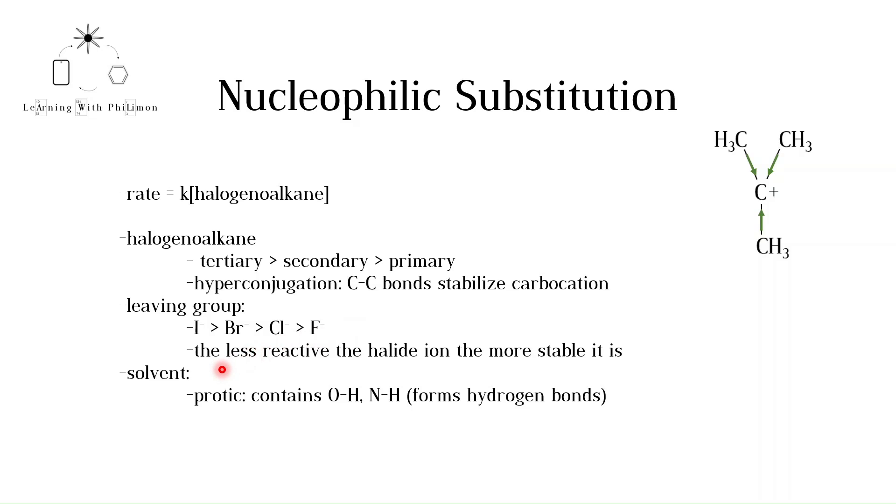SN1 reactions should be conducted in protic solvents. A protic solvent contains oxygen-hydrogen or nitrogen-hydrogen bonds and therefore is able to form hydrogen bonds. Water is an example of a protic solvent. Water forms hydrogen bonds, denoted by the green dotted lines.